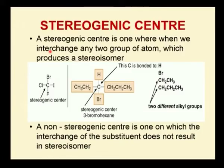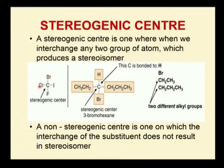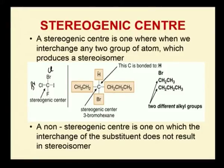These examples show the difference between chiral and achiral. A stereogenic centre is one where interchanging any two groups of an atom produces a stereoisomer. For example, a stereogenic centre bonded with four different atoms: if I interchange two groups like placing bromine here and Cl there, I produce a chiral molecule. Another example is 3-bromohexane, where replacing the ethyl and propyl groups also gives a stereogenic centre.